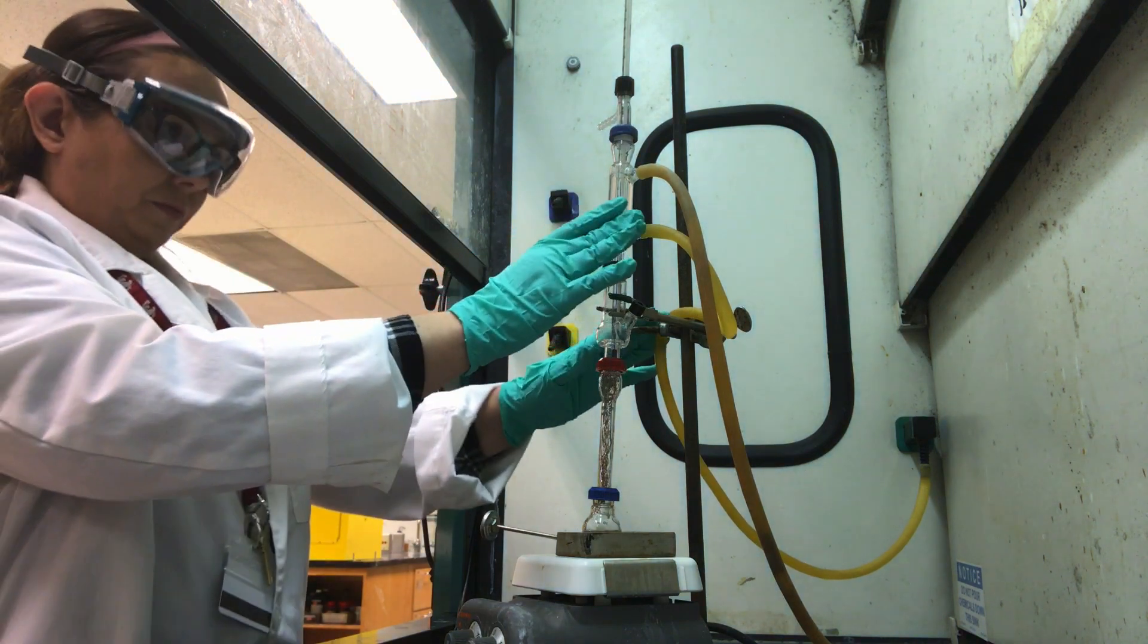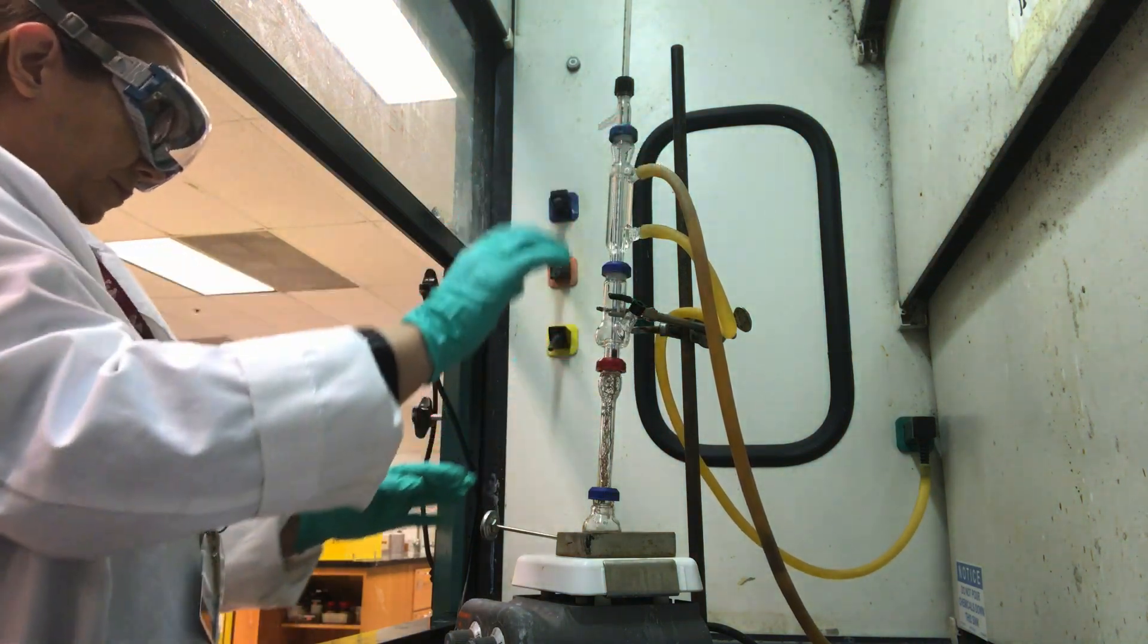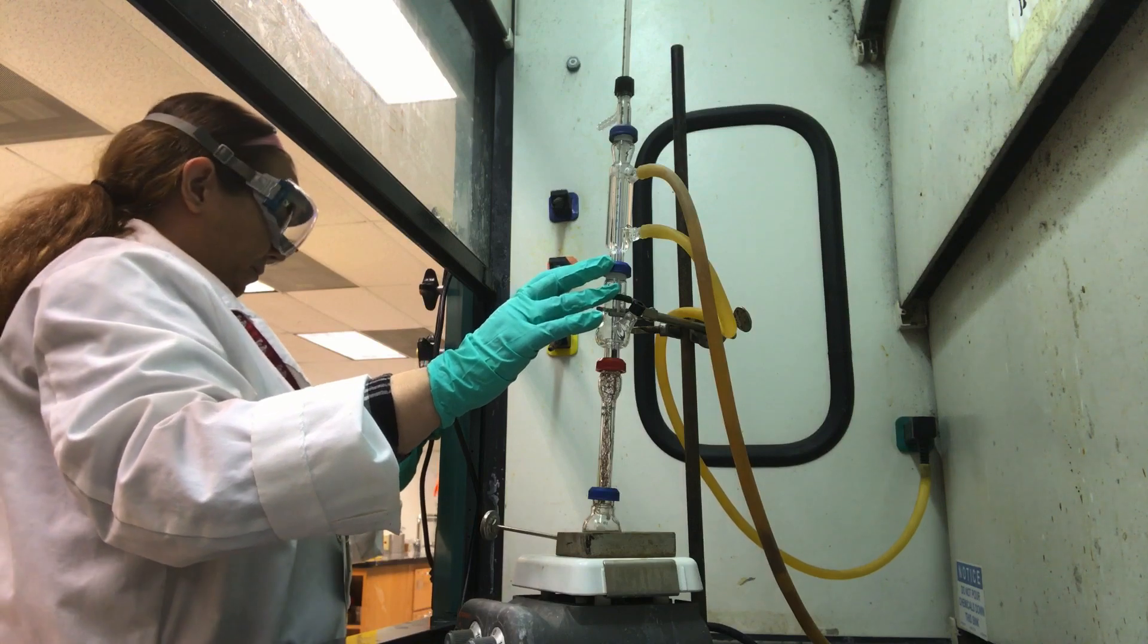To disassemble the apparatus, make sure it is cool to touch. Turn off the flow of water through the water jacketed condenser.